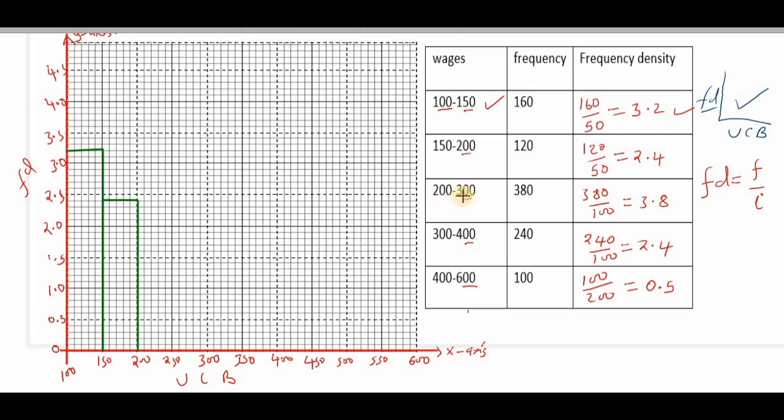Next is 200 to 300 and the frequency density is 3.8, so we come to 3.8 and that runs from 200 to 300. Next we have 300 to 400 and the frequency density is 2.4, so 300 to 400 and then 2.4 right here.